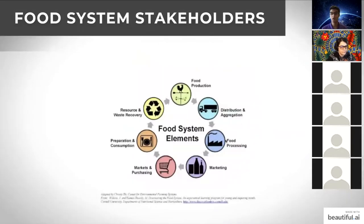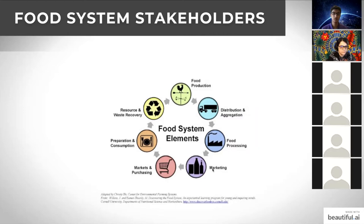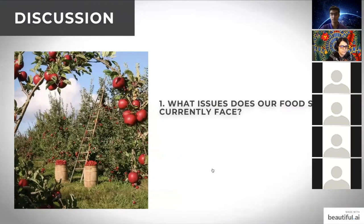Who are the members and stakeholders of our food system? Starting with food production — people grow food on farms or indoors, then it's distributed and aggregated, goes to processing plants, marketed, then to retail stores where we purchase and consume it. Finally, food is either recovered or wasted. There are many millions of people employed along this chain.